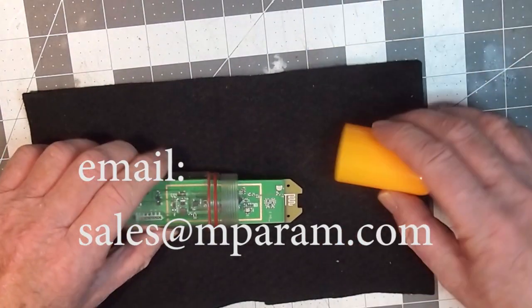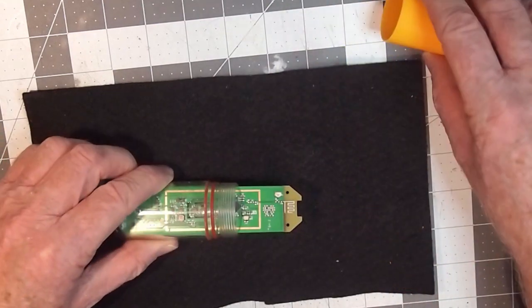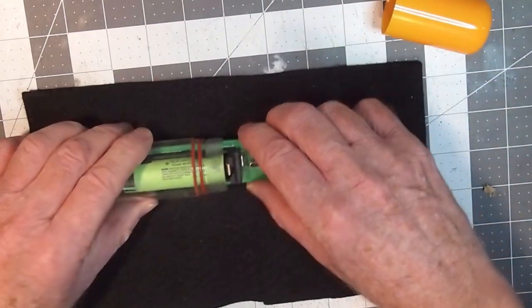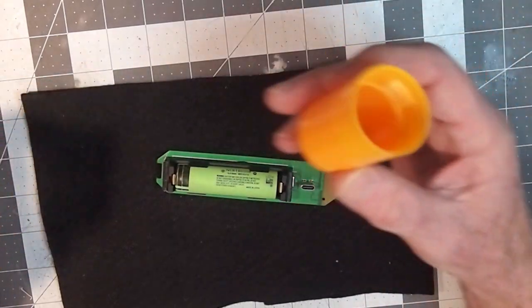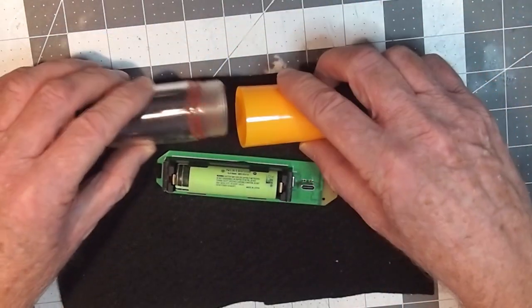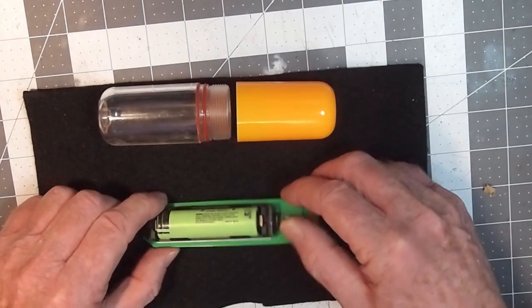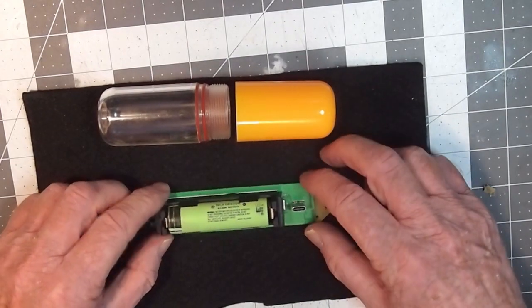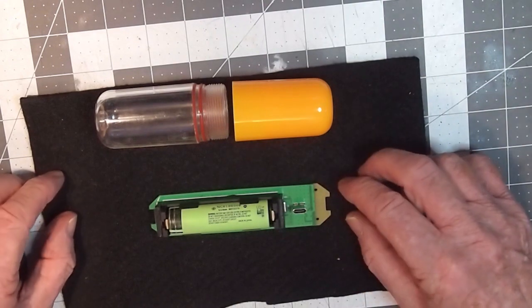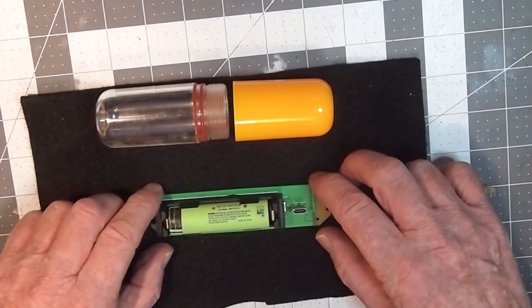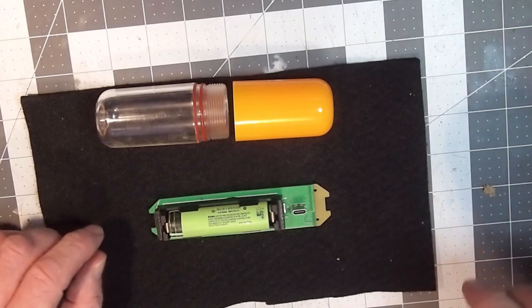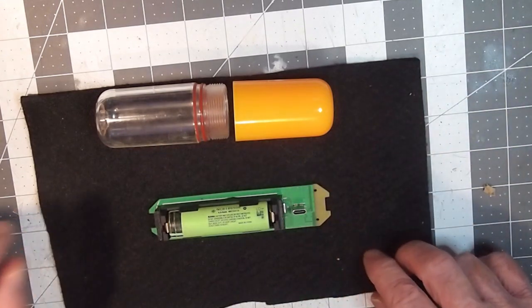To start, take the cap off your float and then remove the circuit board. So now we have the tube in two pieces and we've got the circuit board with the battery in it here. If you're prone to having a lot of high static on your hands, then ground yourself before you start touching the circuit board.